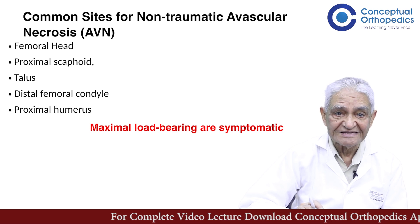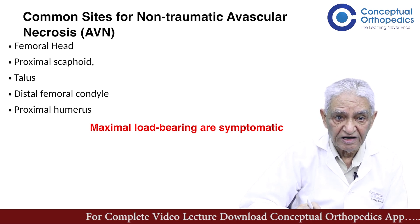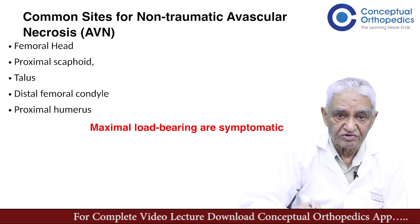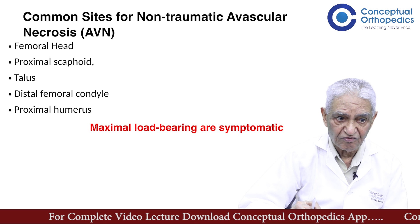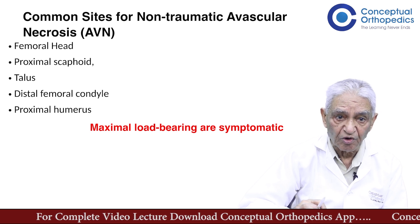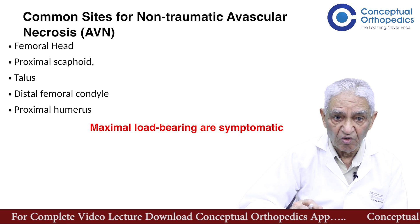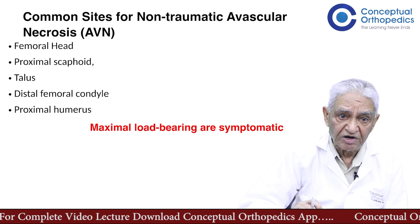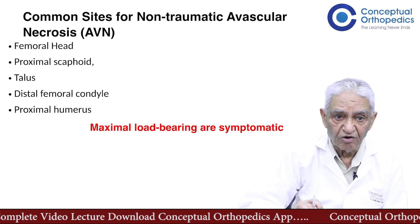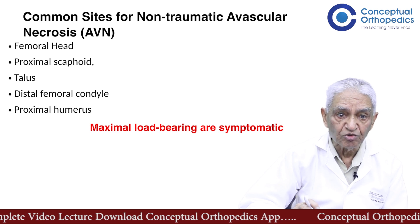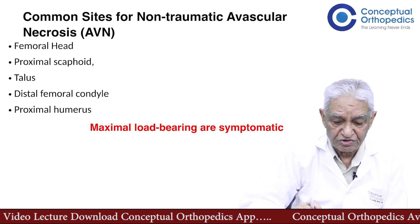Why do these areas get AVN more frequently? In the femoral head, scaphoid, and talus, it is the proximal part of the bone which undergoes avascular necrosis. The blood supply of all three bones runs distal to proximal — from the distal end, blood supply enters into the proximal part. So if there is damage to the bone, the proximal part does not receive enough blood. The blood supply may be cut off by trauma, by thromboembolic phenomenon, or by increased intraosseous or intraarticular tension, resulting in bone necrosis or osteonecrosis.